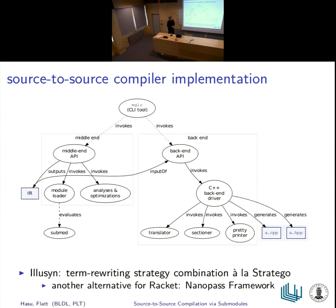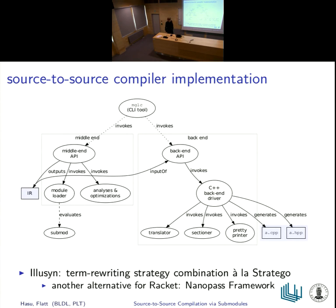There is also a translator from these submodules to C++ as part of the Magnolisp distribution. But the technique described in the paper doesn't really concern this middle end and back end — it's mostly just the front end. The main point is that you just run the submodule, you get your AST, and then you do something to compile it further. In the case of the Magnolisp compiler, that's some Racket pattern matching and generic traversals implemented in terms of strategy combinators.